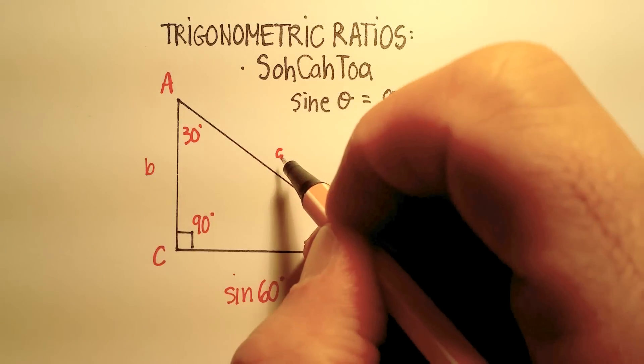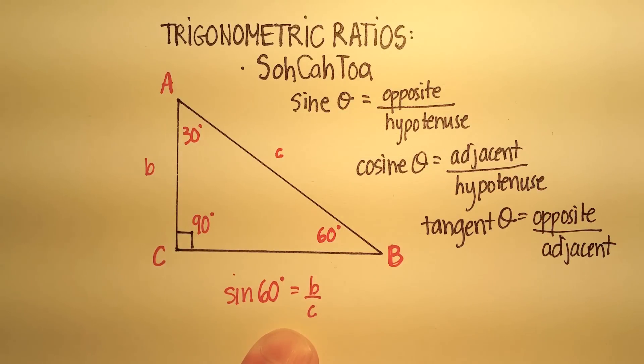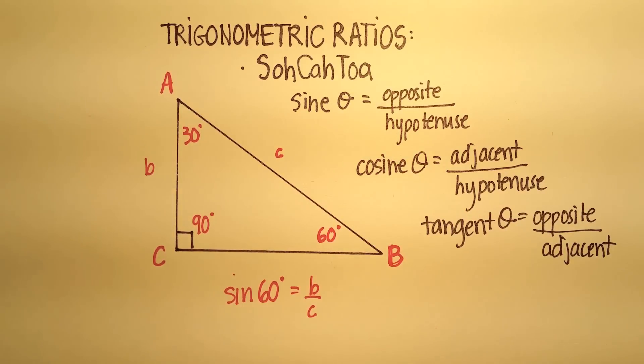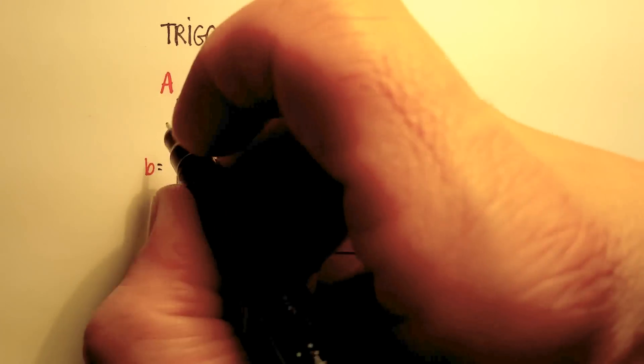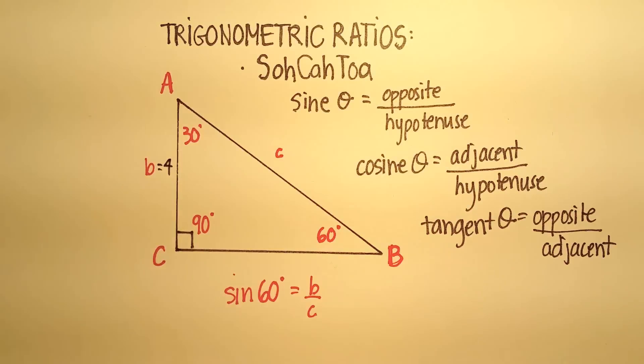So we'll just say this length over this length, b over c. We'll need one more piece of information in order to do this. So in this case, let's just say that we know that b is equal to, let's go with 4, a length of 4.